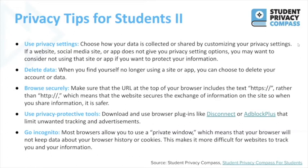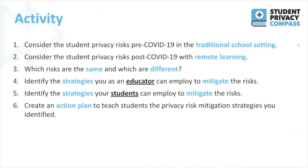We're almost at the end. Now that we understand the risks and some mitigation strategies, let's take a moment to translate what you've learned into an actionable plan. First, consider the student privacy risks in the traditional school setting — in what ways could student information be compromised or exploited? Did students use any online services with questionable privacy policies? Next, consider the student privacy risks with online learning. How do they compare with risks in the traditional school building? Which risks are lessened and which are exacerbated? Think of some strategies that you as an educator can employ to mitigate the risks you identified. Can you think of some strategies your students can implement? Now, create an action plan to teach your students the privacy risk mitigation strategies you identified. Will you integrate customizing privacy settings the next time students use an ed tech tool? Will you use an activity illustrating the longevity of information shared online? Be sure to write your ideas down.